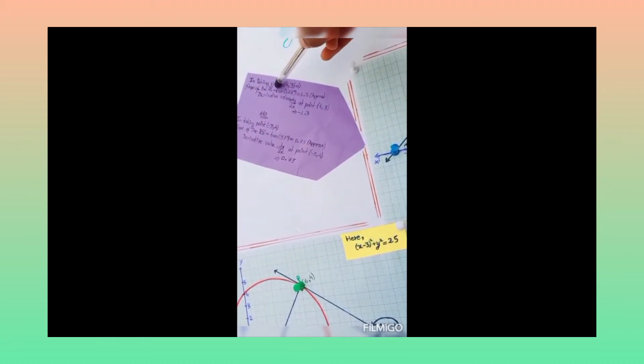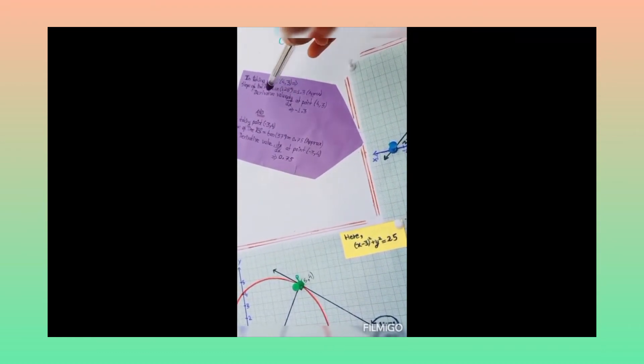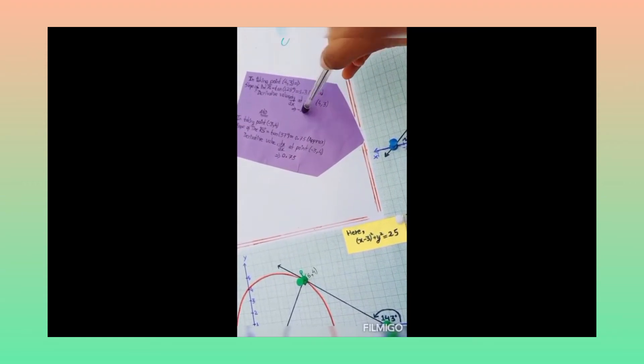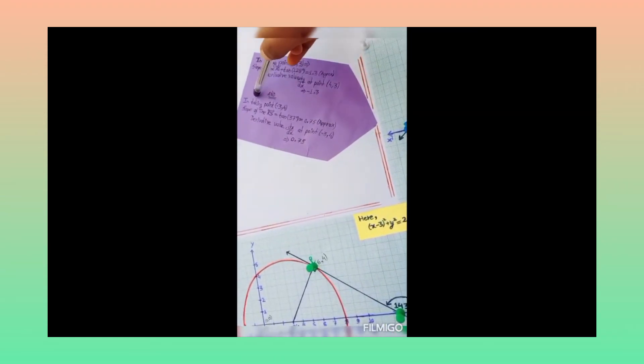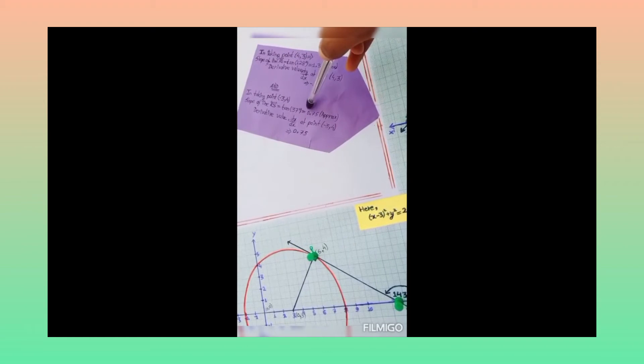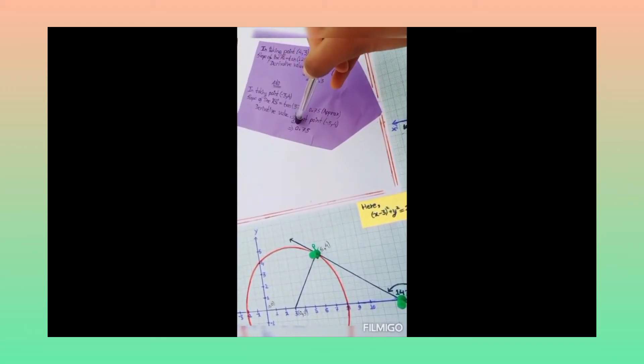And here the angle of inclination is 37 degrees. So we see that in taking point 4,3, slope of the line P is equal to minus 1.3 and derivative value is also minus 1.3. And in taking point minus 3,4, slope of line RS is 0.75 and derivative is also 0.75.